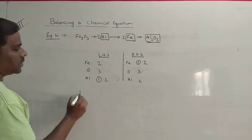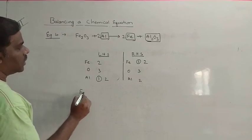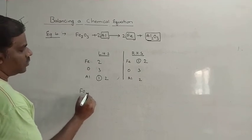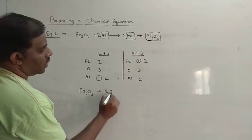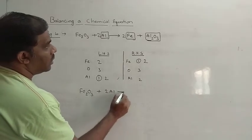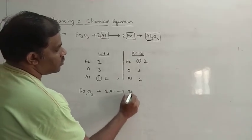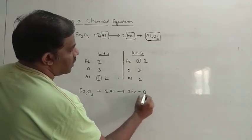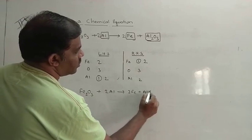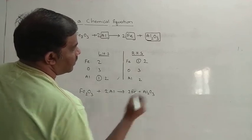So we can now say that this is the balanced equation. The balanced equation looks like: Fe2O3 plus 2Al gives rise to 2Fe plus Al2O3.